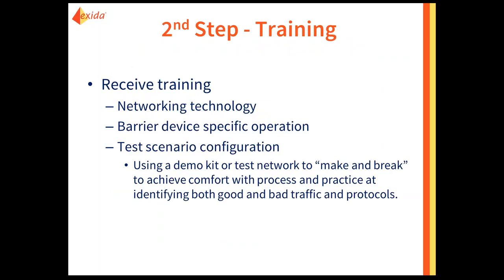Now we've identified our device and we know who we're going to use. The second step is to receive training on these devices. The training should include an understanding of networking technology in general — how it's laid out, what devices do and don't do — how your chosen barrier devices work since they all work a little differently, and then test scenarios of making and breaking your network architecture to see how different rules affect your network.